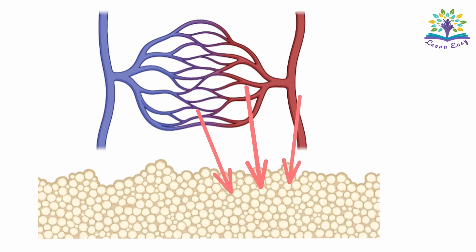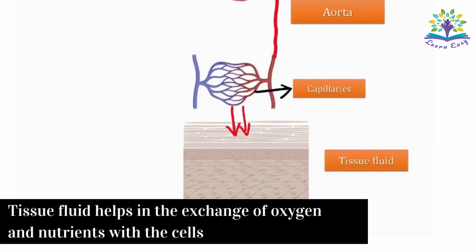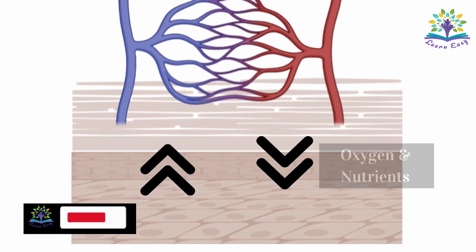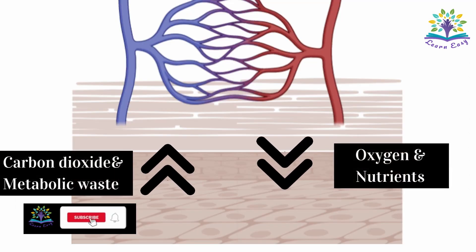Tissue fluid helps in the exchange of oxygen and nutrients with the cells. Carbon dioxide and excretory material from the cell are diffused back into the tissue fluid.